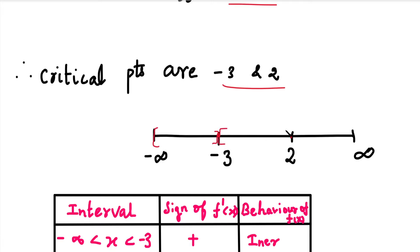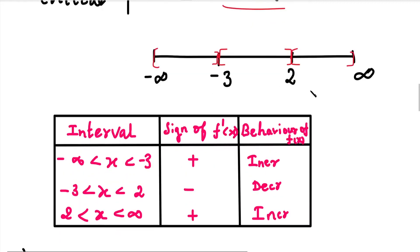We set up three intervals: minus infinity to minus 3, then minus 3 to plus 2, and plus 2 to infinity. In each of these three intervals, we check whether f dash of x is positive or negative. Because if f dash of x is positive in an interval, then f of x is increasing in that interval, and if f dash of x is negative, then f of x is decreasing in that interval.